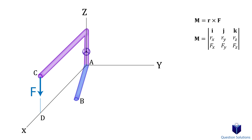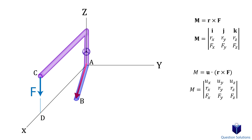Remember we used a cross product between a position vector and a force when doing vector analysis. Now that we're trying to find the moment about a specified axis, all we need is a unit vector that defines the direction of that axis. We take the dot product between that unit vector and the result of the cross product.